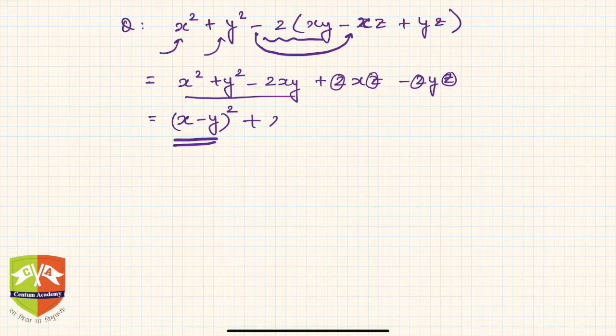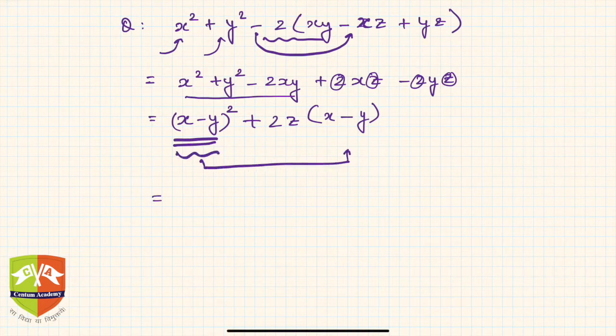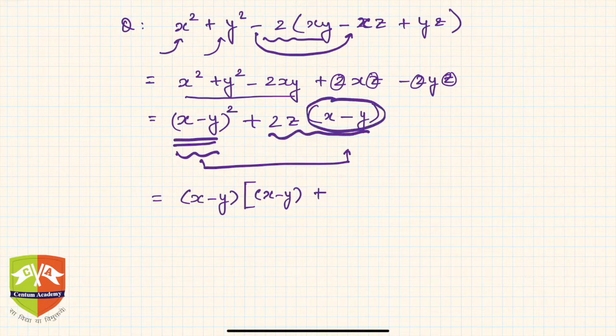Hence I can write plus 2z common, and the remaining factors are x and y. So if you see now, again we got another common factor (x - y). Hence the next step will be simply write (x - y). What is left? If it was (x - y)², I took one (x - y), so one (x - y) will be left over there. And if I took away (x - y) from here, then what is left over here? 2z.